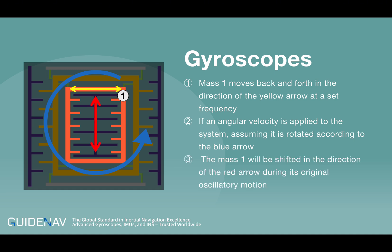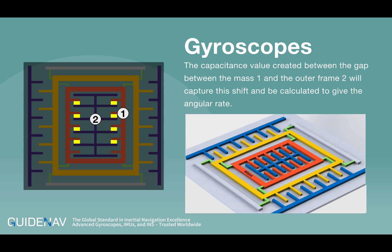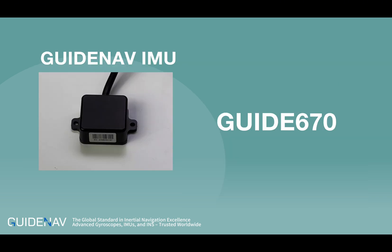then mass one will be shifted in the direction of the red arrow during its original oscillatory motion. And the capacitance value created between the gap between the mass one and the outer frame two will capture this shift and be calculated to give the angular rate. This is a Guide 670 IMU from GuideNav.